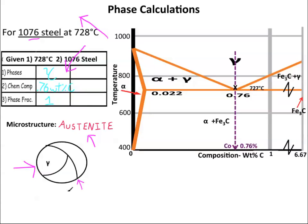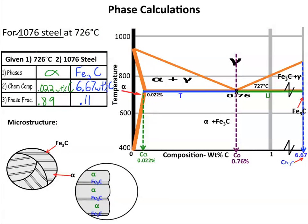Single-phase regions are really easy to draw and understand. Things will get more interesting in the next few examples when we start adding two phases. Our next microstructure is going to be for 1076 steel at 726 degrees Celsius. 1076 steel has the eutectoid composition, and 726 degrees Celsius is 1 degree below the eutectoid temperature. I've already written in the calculations that we did in the last video.